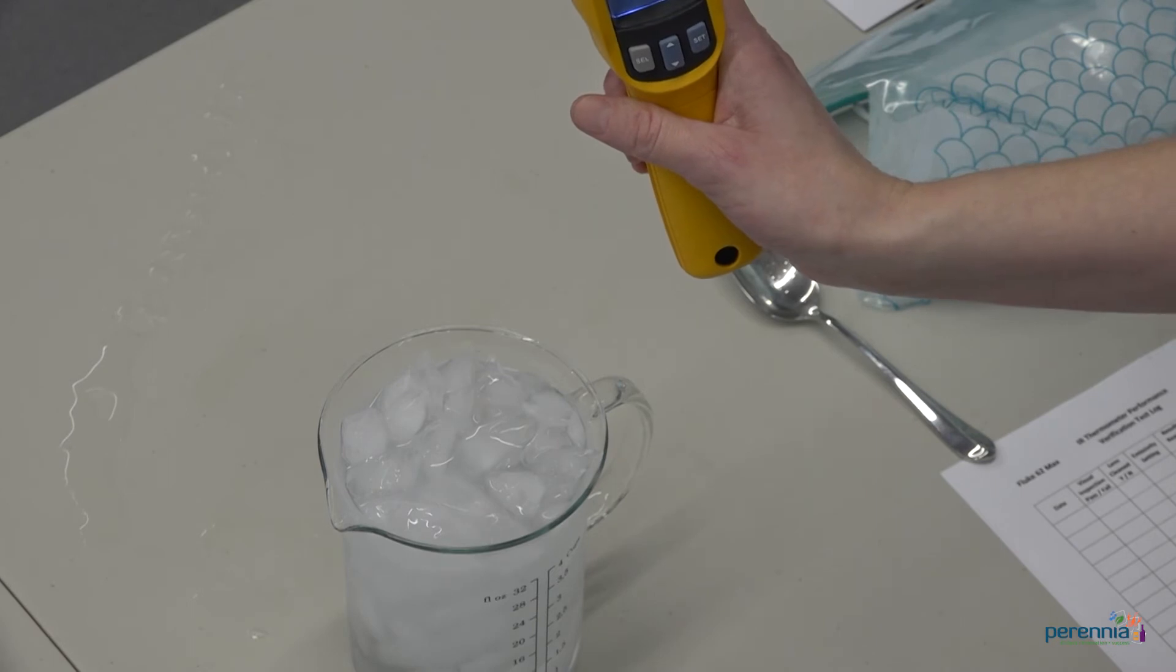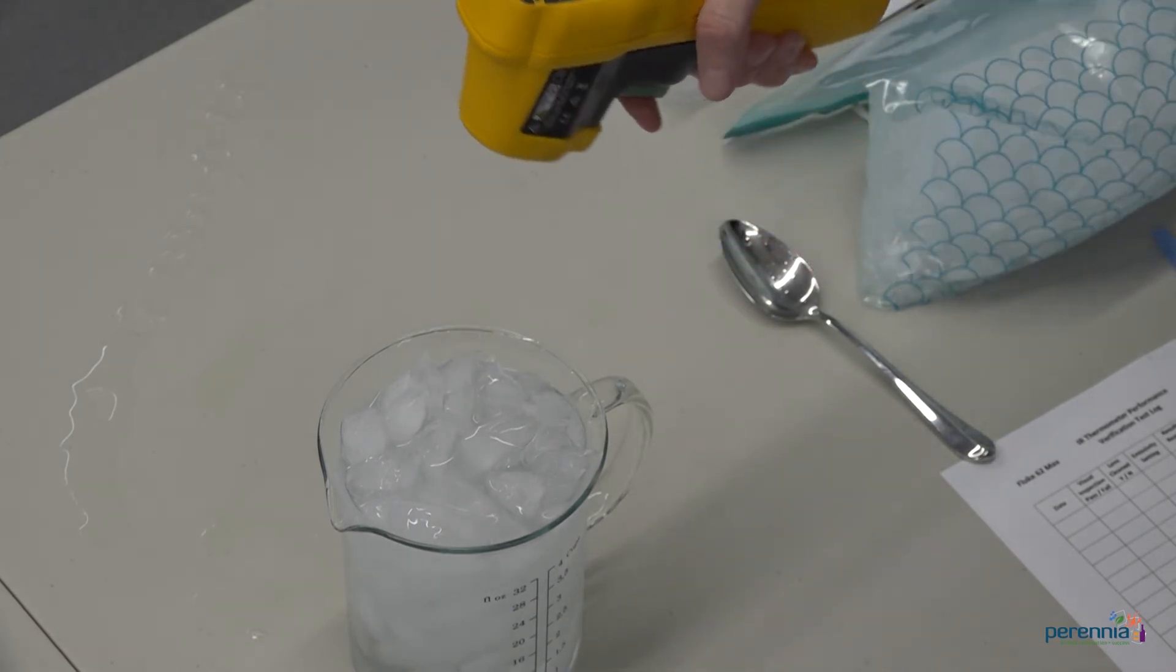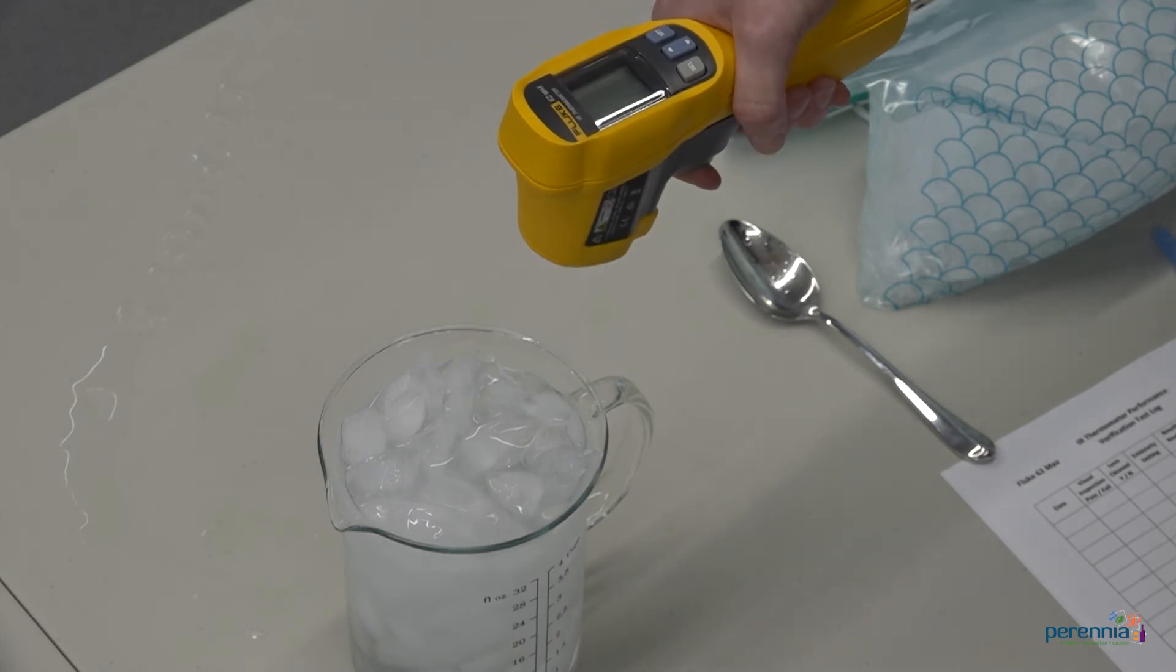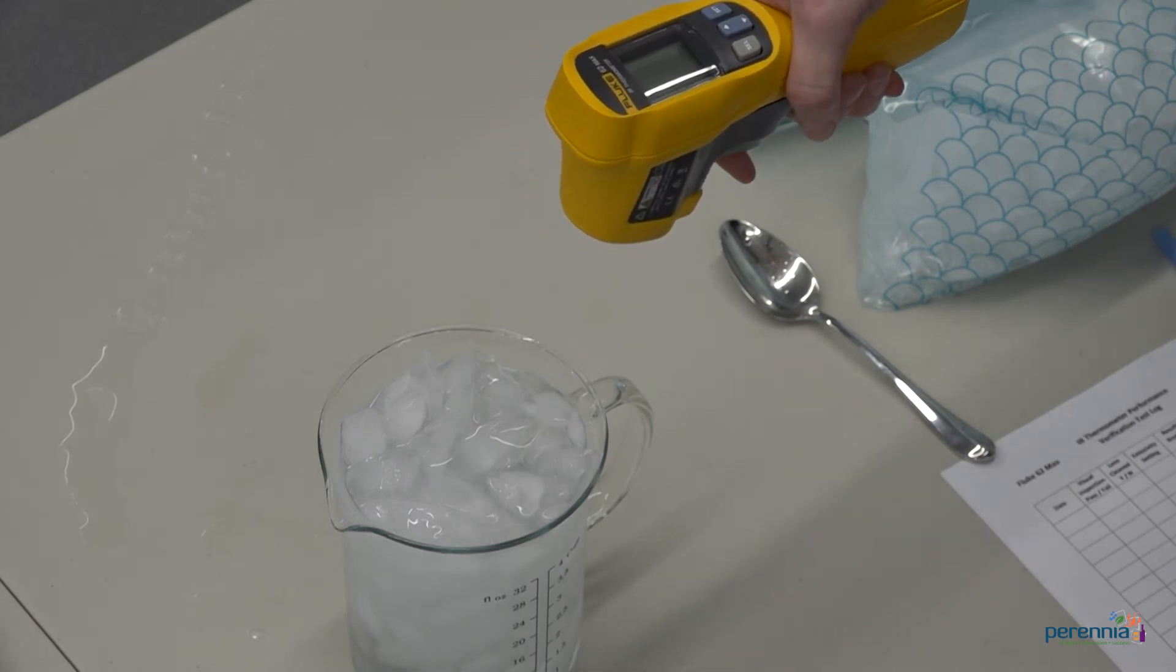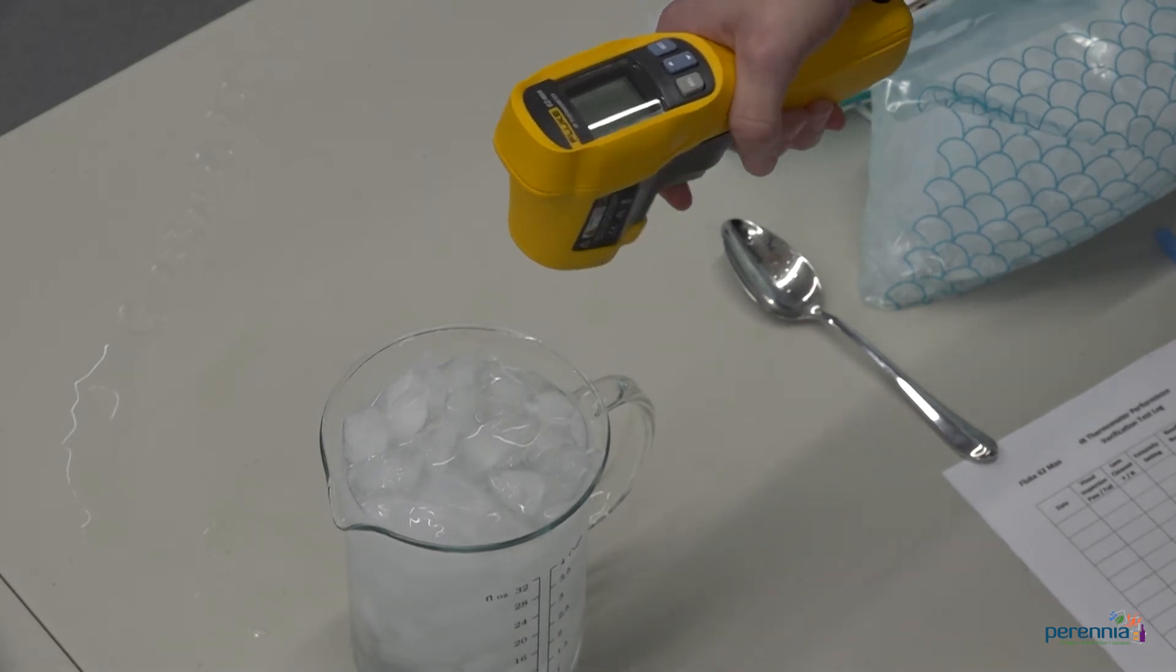Note, if you hold your infrared thermometer too far from the surface of the ice bath or hold it at an angle, your measurement will include the surroundings, for example, the sides of the glass or container and give you an inaccurate reading.